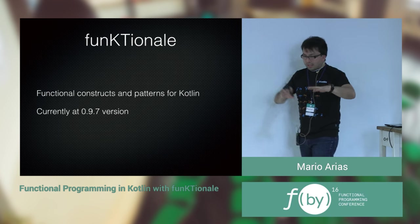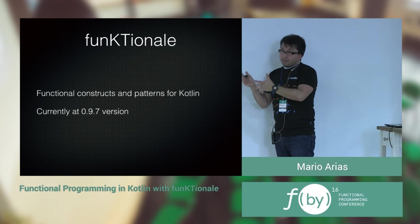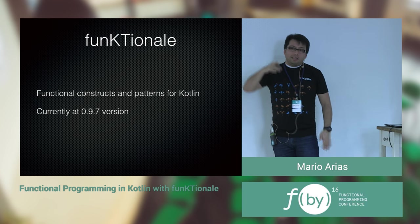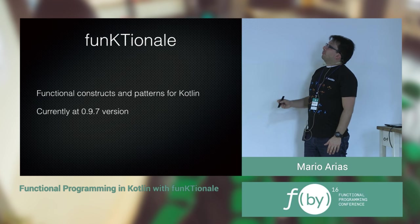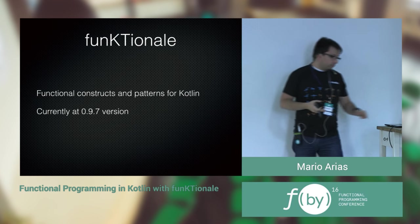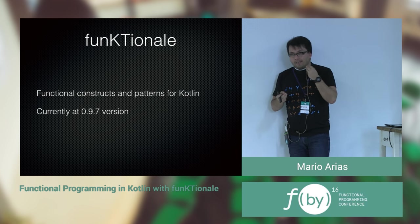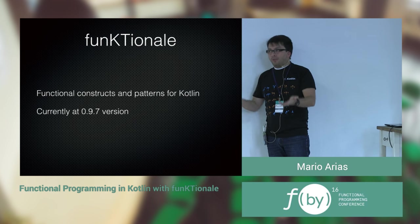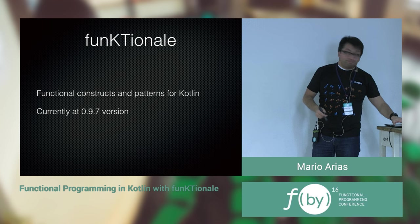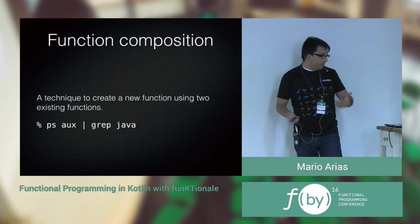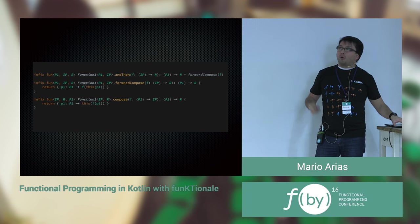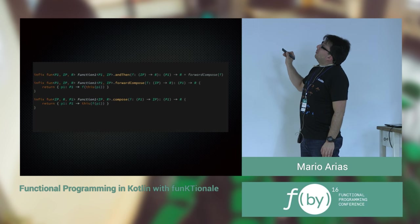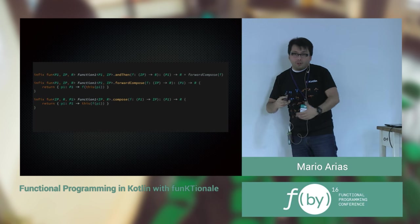Now we'll talk about the library. I created this library called Funktionale — it's just Functional Constructs for Kotlin. Because Kotlin doesn't have many functional features inside the language itself, but the language is powerful enough to let me add new features. For example, we can have function composition. How? I just create function extensions for the function type, and then my functions gain more features.